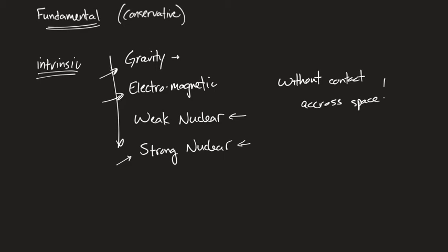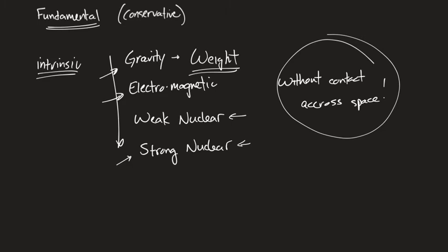I want you to know the names of the four fundamental interactions and their order from weakest to strongest. I want you to know that they all act without contact across space, and that we don't know how or why. And I'd like you to know that each one acts on its own unique intrinsic property of matter.